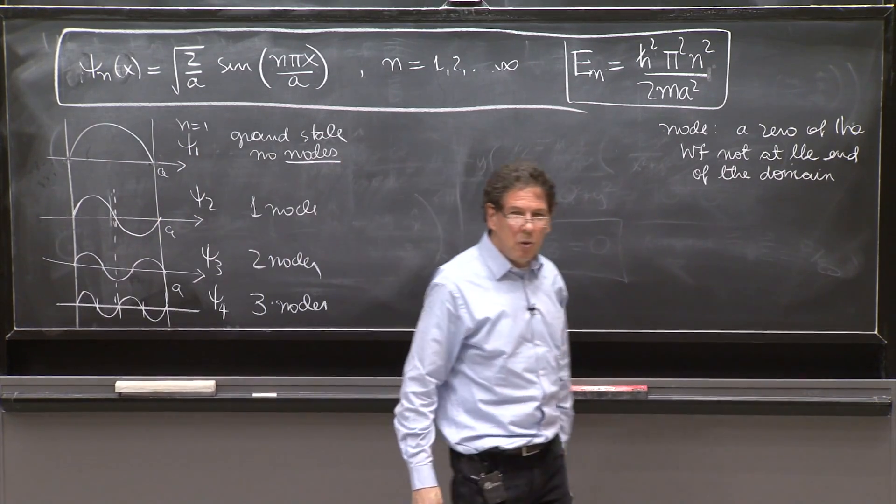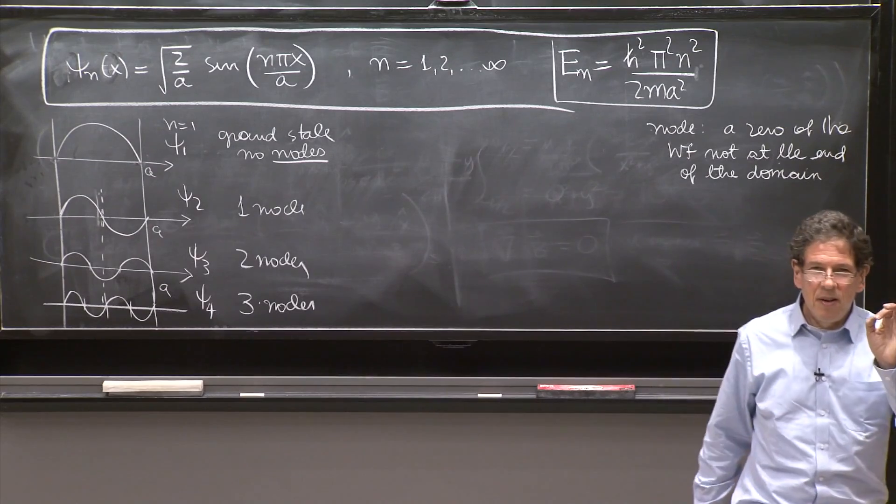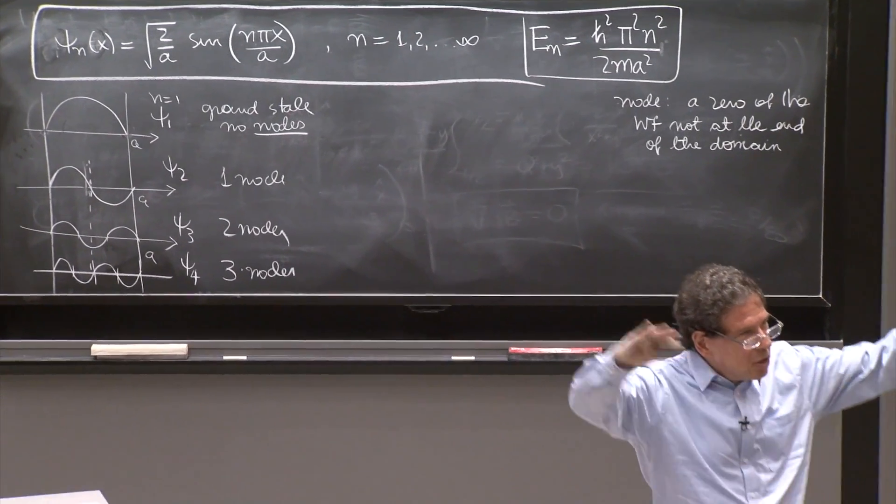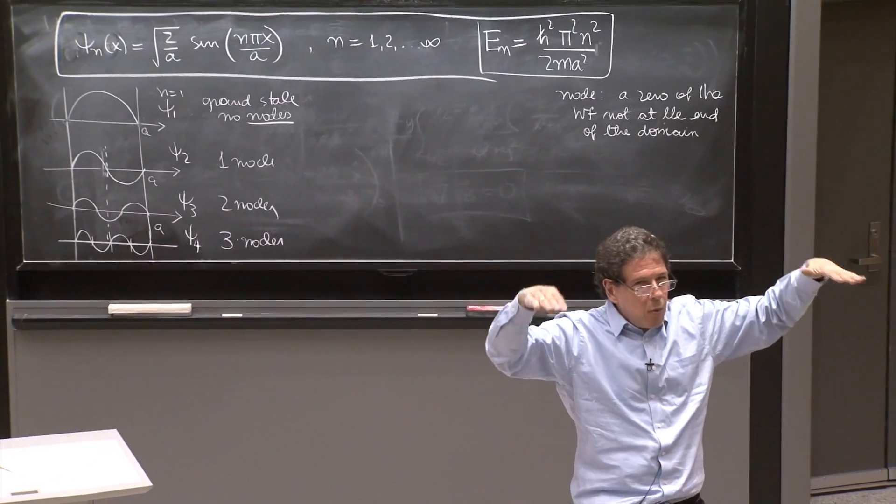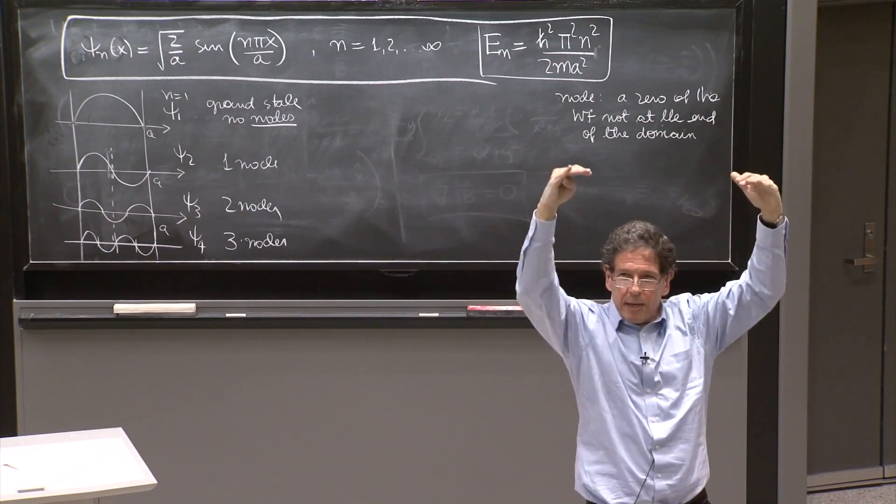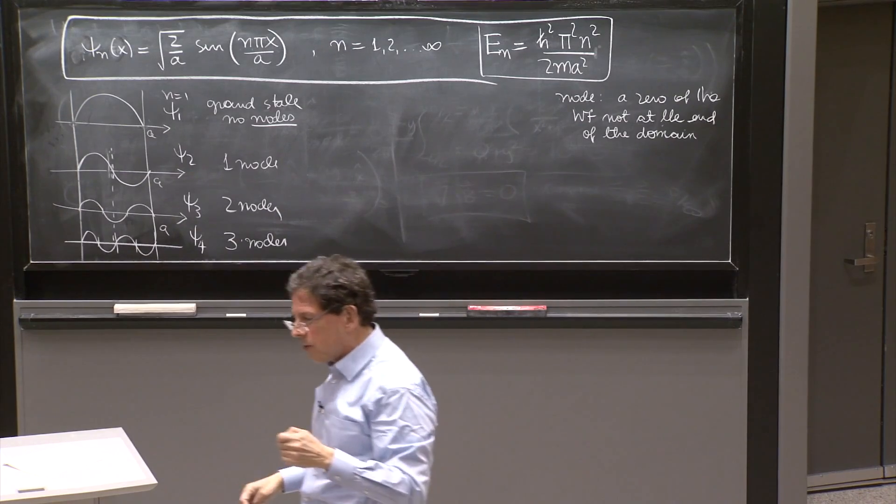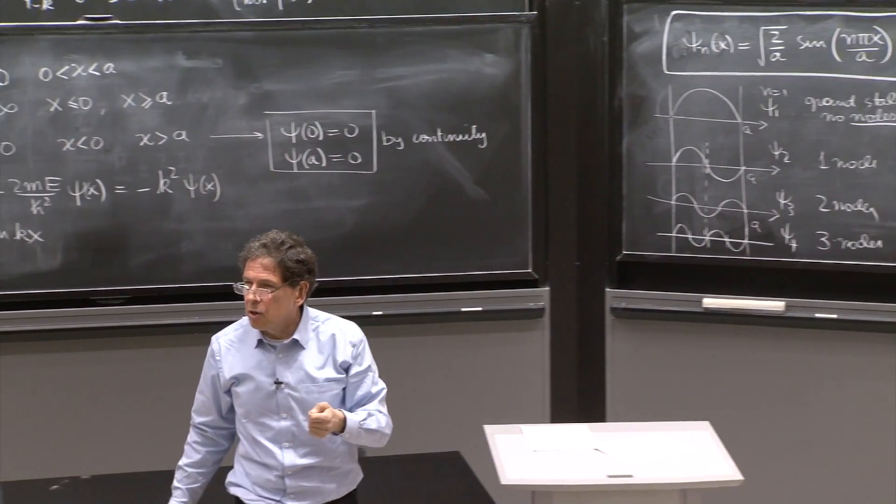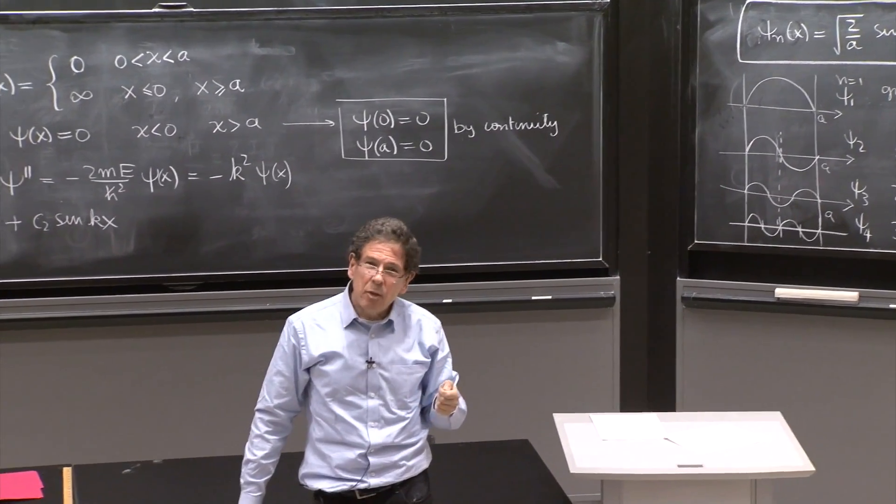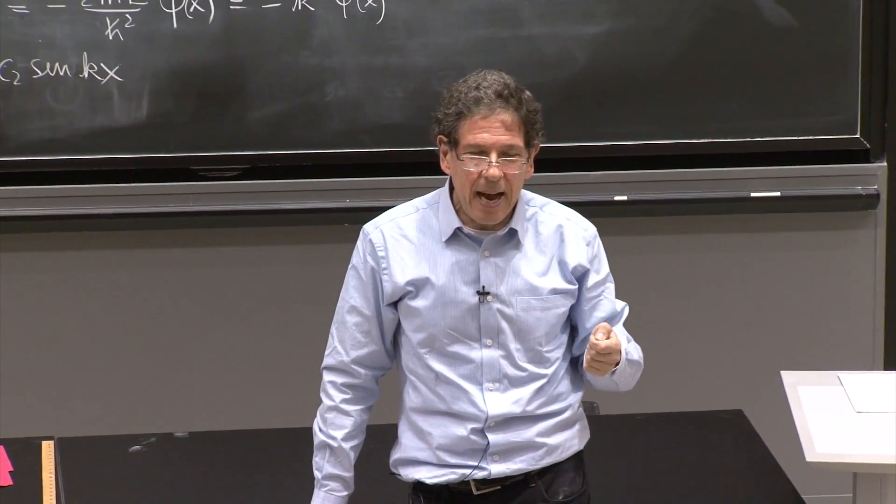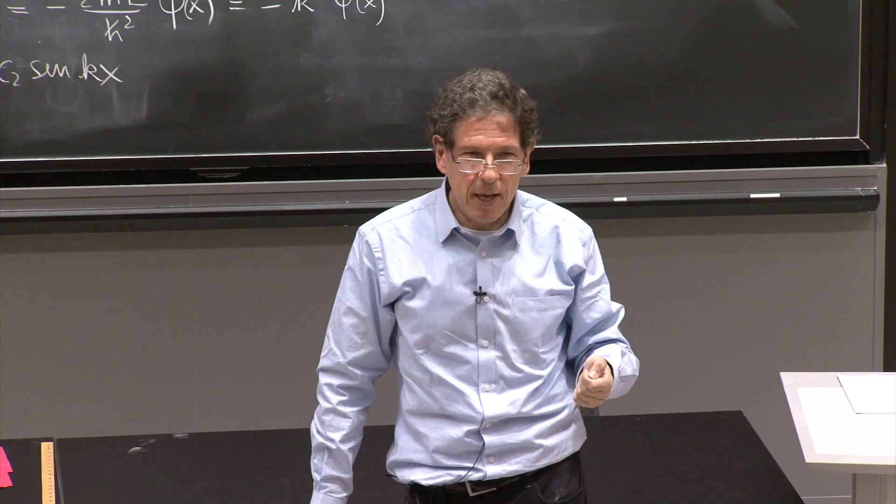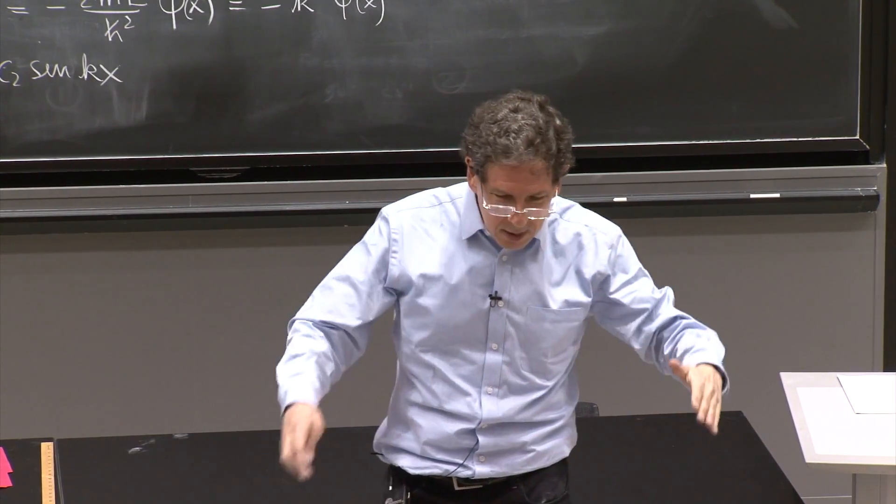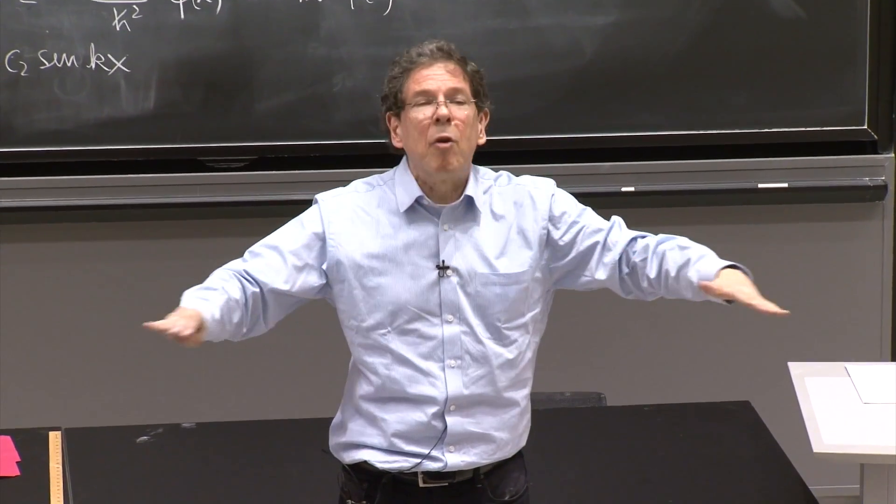So the number of nodes of the wave function increases. In the potential, you have more and more wave functions for the higher and higher excited states, and the number of nodes increases one by one on each solution. That's actually a theorem that is valid for general potentials that have bound states.